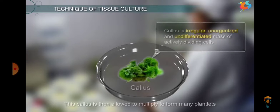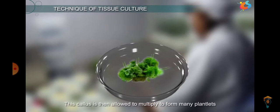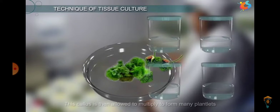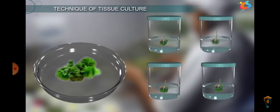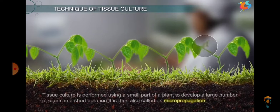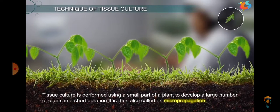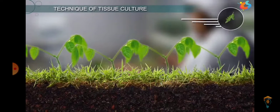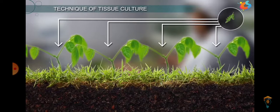Callus is an irregular, unorganized, undifferentiated mass of cells. We then allow the callus to multiply by culturing it in different containers, as can be seen in the pictorial representation here. After performing this, it can be transferred to soil. Tissue culture is performed using small parts of the plant to develop a large number of plants in a very short duration of time, and therefore it is referred to as micropropagation.